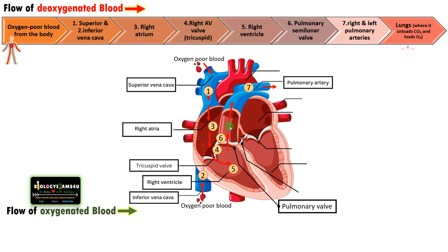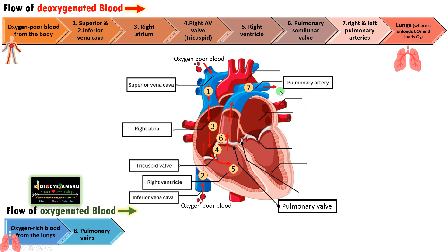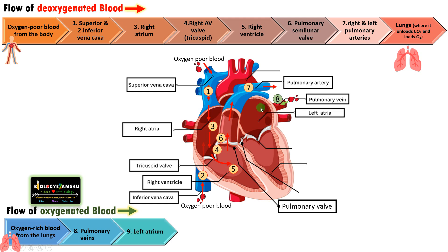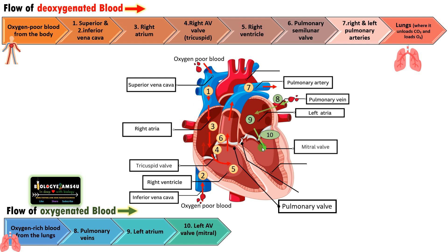That is the pathway of oxygen-poor blood. Now let us see how oxygen-rich blood from the lungs moves through the heart. Oxygen-rich blood from the lungs moves through the pulmonary vein and enters into the left atria. Then the blood flows through this mitral valve into the left ventricle.